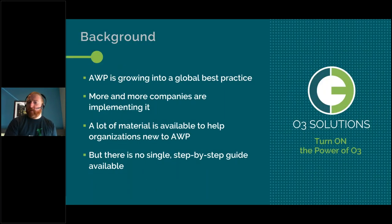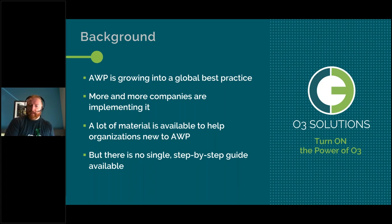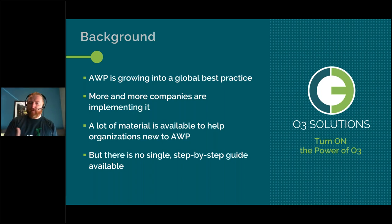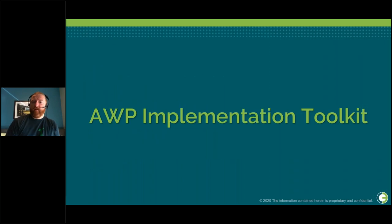This is the third and last in a three-part workshop series supporting the AWP implementation toolkit. CII made Advanced Work Packaging a best practice in 2015. Since then, various subcommittees and working groups within CII have steadily developed more material, but there is a lack of a single complete walkthrough for how to do AWP on a project — one based on an actual project, grounded in reality rather than theory, and giving proper consideration to the technology involved.